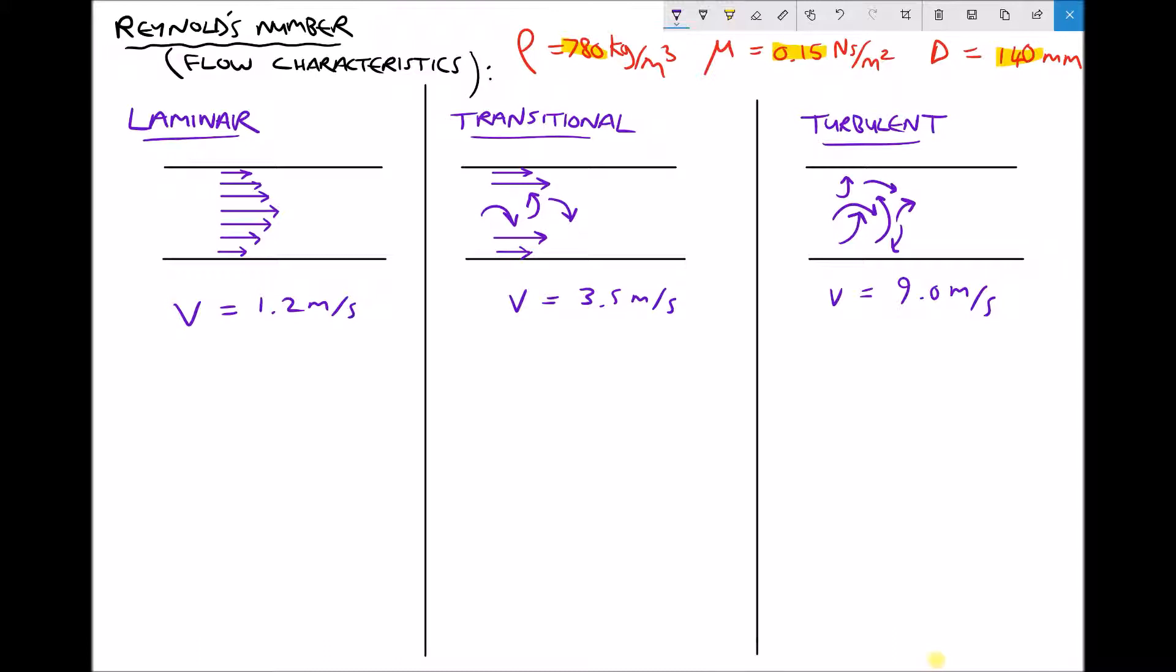If we start on the far left hand side with laminar flow, we can see that the particles of the fluid are flowing in layers across each other. We would describe this as smooth flow because there's no mixing between those layers. You'll notice that the velocity at the centre of the pipe is larger than at the outsides, and the reason for that is because we have a shearing effect due to friction at the walls.